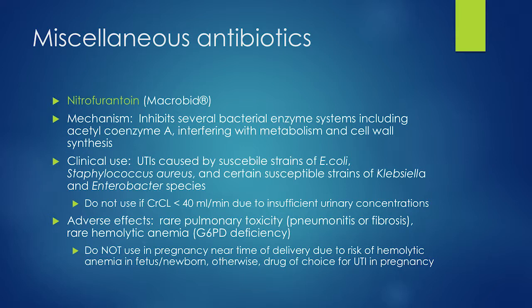Macrobid — nitrofurantoin — will be one of your workhorses for treating uncomplicated urinary tract infections. Be careful: don't use it near the time of delivery in a pregnant patient because it can cause hemolytic anemia in the newborn. Otherwise, macrobid is your drug of choice for UTI in pregnancy. It's renally cleared, so if a patient has renal dysfunction, the drug doesn't get down into the bladder well — you cannot use macrobid for a UTI in someone with renal dysfunction.